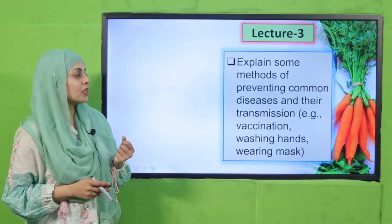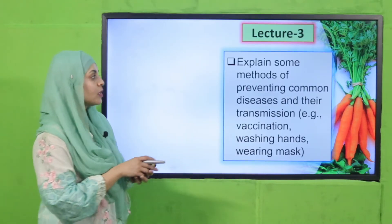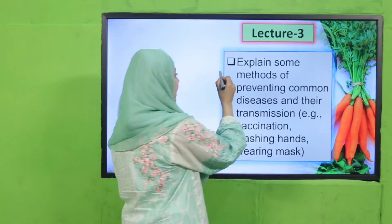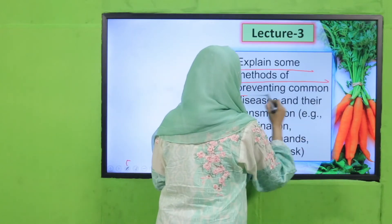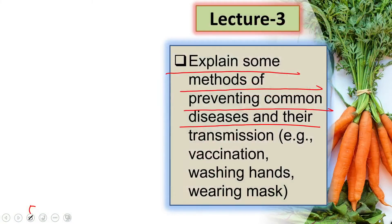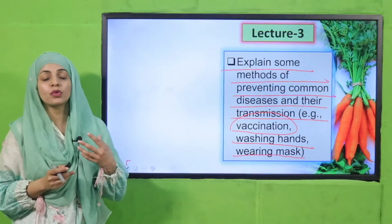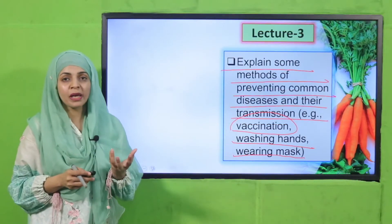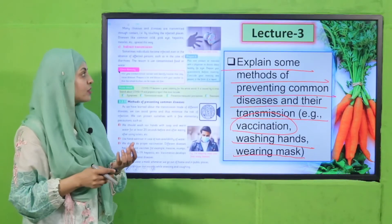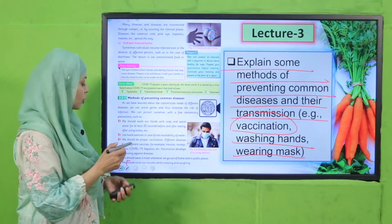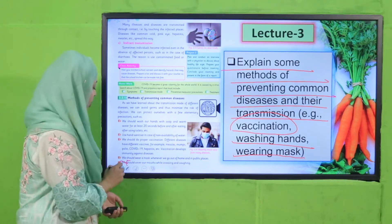In Lecture Number 3, students will be able to explain some methods of preventing common diseases and their transmission — for example, vaccination, washing hands, and wearing a mask. We will discuss preventive measures, and the page under discussion in lecture number 3 is page number 42.